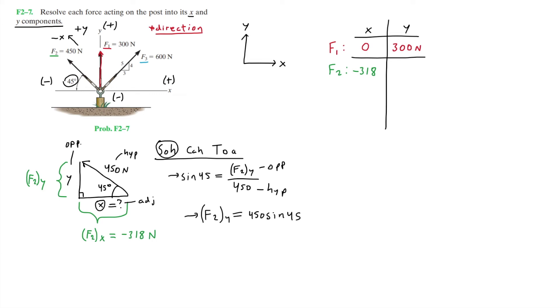Now again, checking the direction, this is in the positive Y direction, so this will essentially stay the same as positive. So that'll be 318. Therefore, F2Y is positive 318 Newtons. So the Y component of F2 is 318 Newtons.